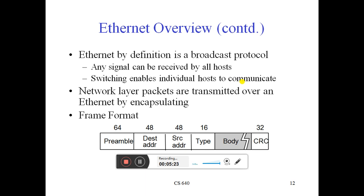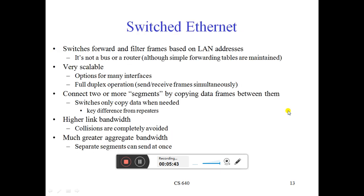The frame body depends on your message structure, and CRC — Cyclic Redundancy Check — checks for redundancy. All bits are separated by a fixed number of bits required. The body is not fixed; it changes depending on the message structure. The switch is very important for communication — for duplex communication over longer distances, it separates collision domains, provides higher link bandwidth, and much greater aggregation.